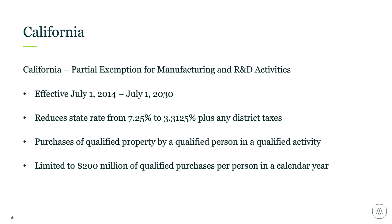The reduced rate is approximately 50% of the state rate, so there's definitely a good benefit. It's important to distinguish between the state rate and the local rate. Districts that impose local taxes — this partial exemption only applies to the state rate; the district tax will still apply in full. The exemption applies to purchases of qualified property by a qualified person in a qualified activity. There is a limit of $200 million of qualified purchases per year, per person in the calendar year — a pretty generous threshold.